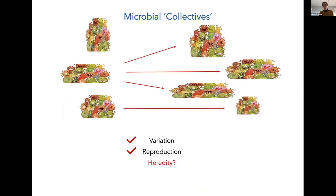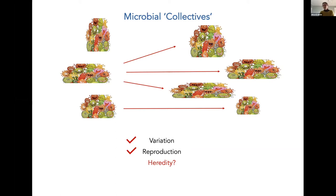Let's say we have solved the problem of reproduction — we somehow force a reproductive process or genealogy on the collectives, even if they don't initially have one. What about heredity? Is heredity trivial? If you think that the reproductive process involves some stochasticity, which might be expected especially for a nascent reproductive process, then the material continuity between one generation of collectives and the next might not guarantee much in terms of heredity of the function. This is actually the main subject of my talk: a model that allows us to understand when and how heredity can be gained and strengthened during the course of evolution.